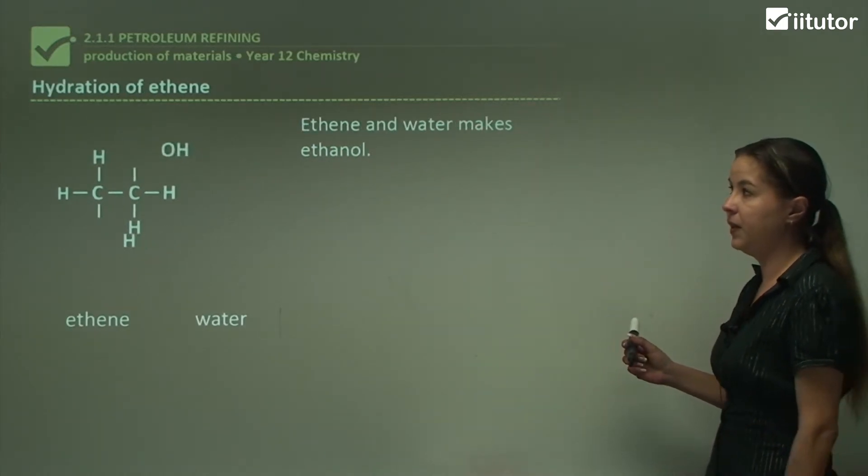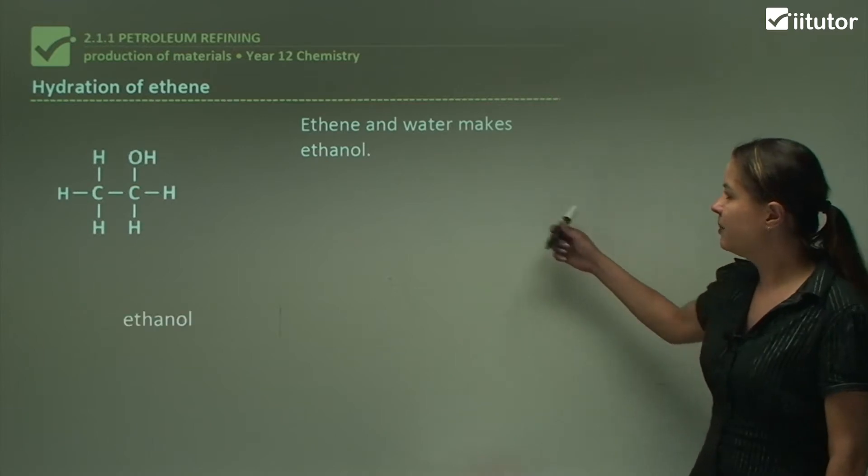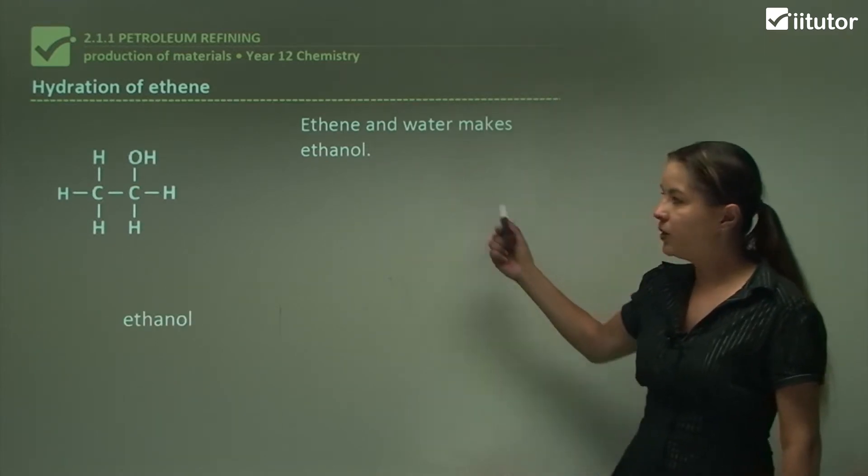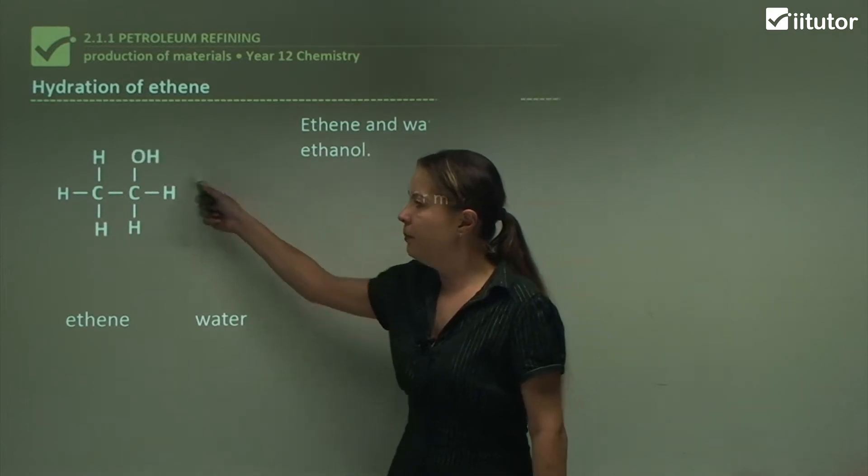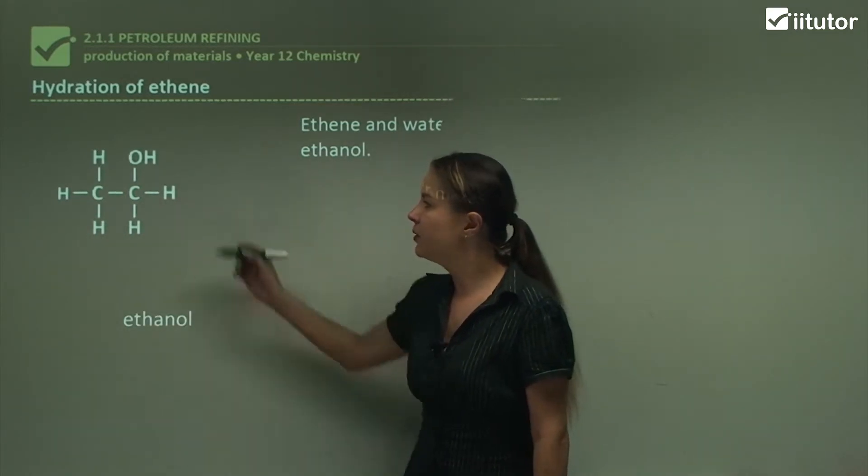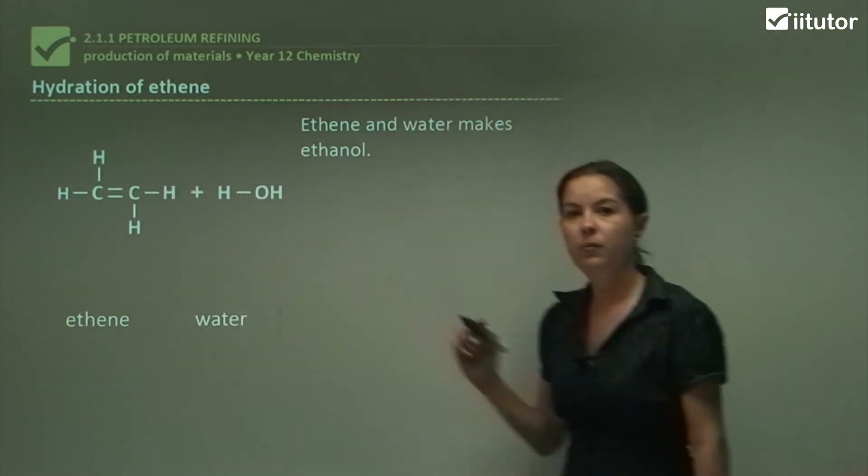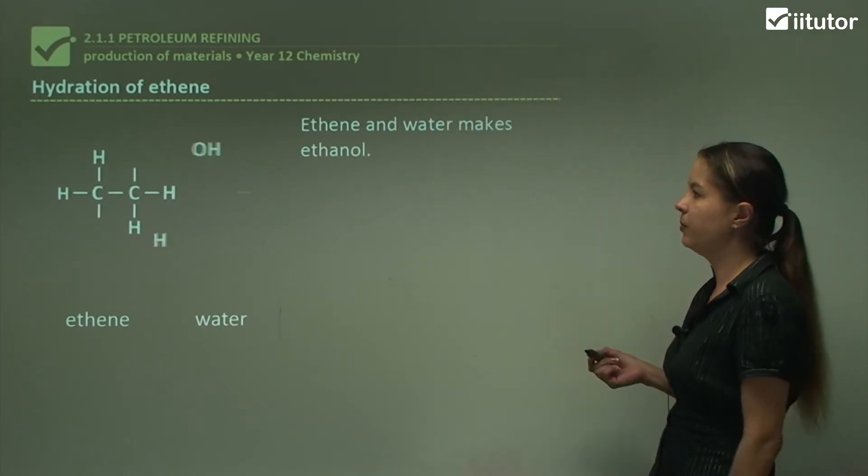Now we'll look at hydration of ethene. This is where ethene and water make ethanol. Here we have the water molecule being incorporated over the double bond to form ethanol with an OH group or an alcohol group as we call it.